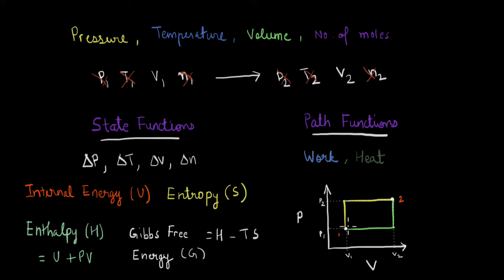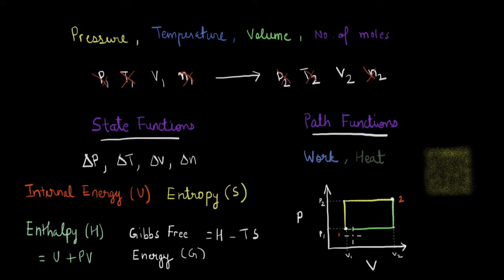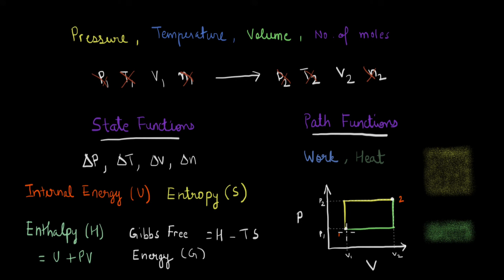In the case of the yellow path, the area under the curve — the work done — is the shaded yellow region. For the green path, the work done is the shaded green region. Comparing these areas, the work done along the yellow path is much greater than along the green path, even though we go from the same initial to the same final position. This is why work is a path function. You can also see here why pressure and volume are state functions — irrespective of the path, the difference in pressure or volume is just the final value minus the initial value, independent of the path taken.